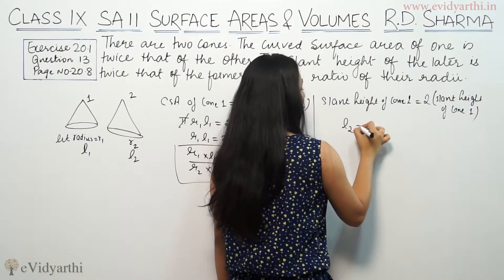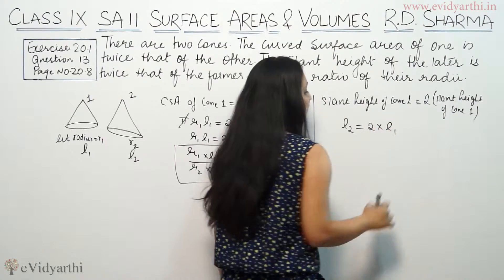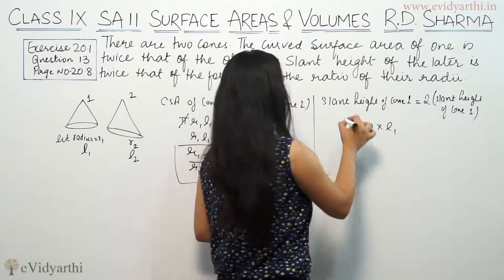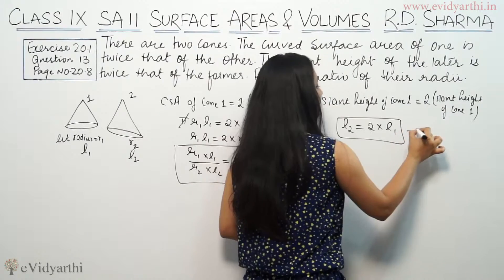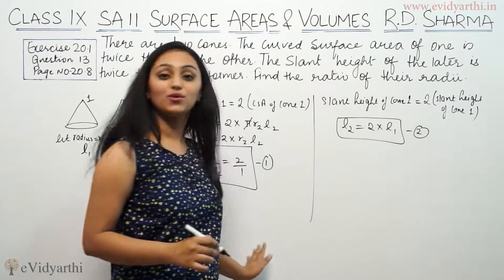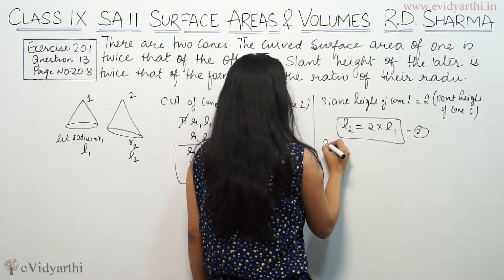Its slant height L2 is twice of L1. So this is our second equation. We'll put the value of the second into the first. So putting the value of second in first.